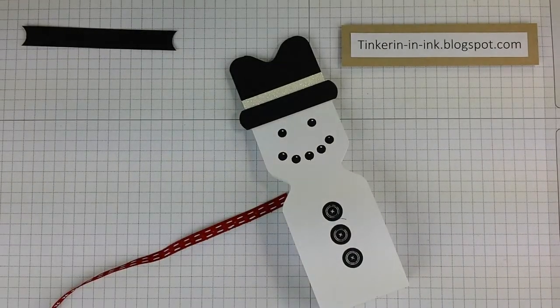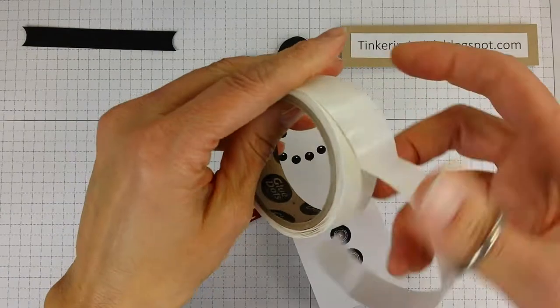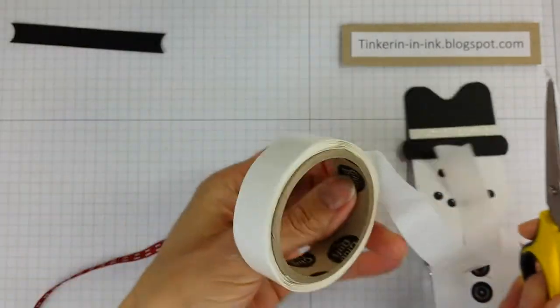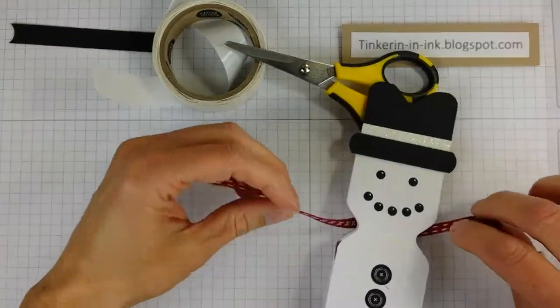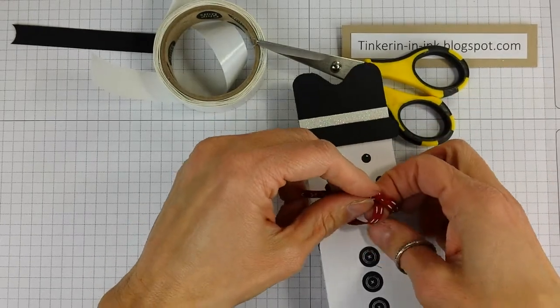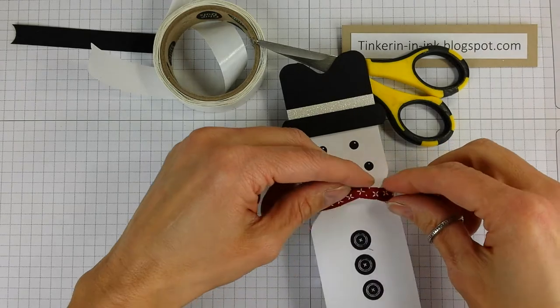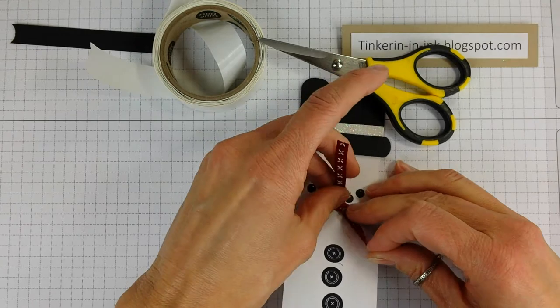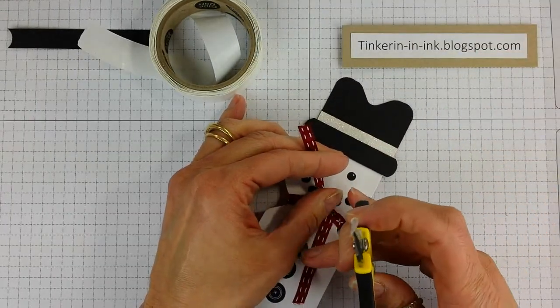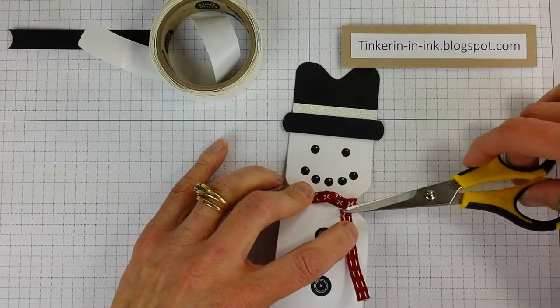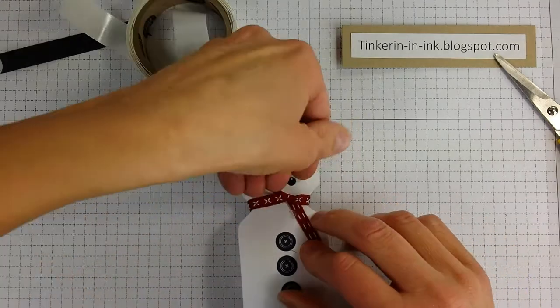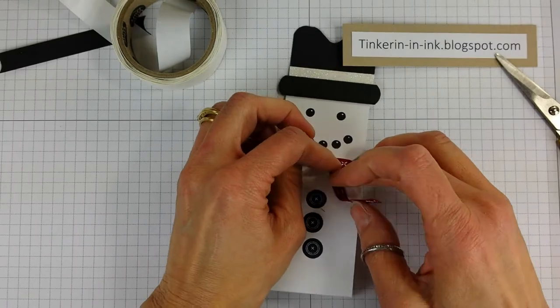Then we're going to take a glue dot and get that prepped because that's what we're going to use to secure our little scarf on, our ribbon scarf. So I'm just going to pick it up on my scissor and have that at the ready. Wrap the ribbon around his neck. Tie a knot. Oh, I just realized I forgot to put his little nose on. We can still do that. Alright, so I want this partially on the ribbon and partially on the paper. Oh my goodness. Stay put.